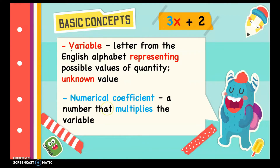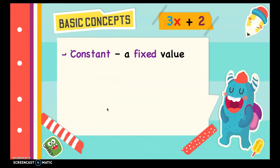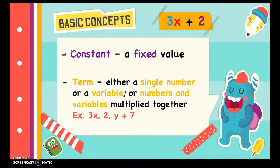Next, we have constant. It is a fixed value. In 3x + 2, the 2 is the constant. It is any real number with no variable beside it — just the number itself.